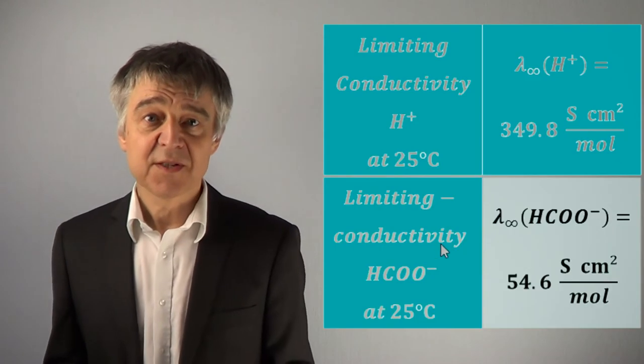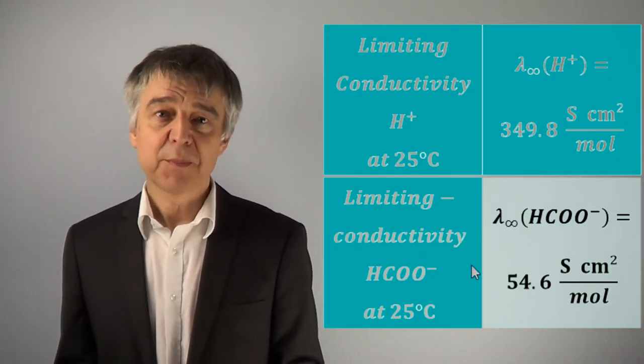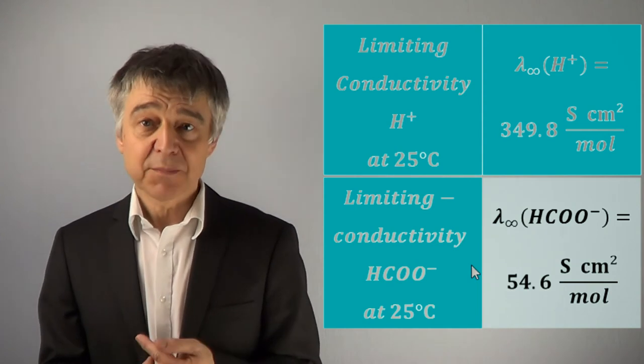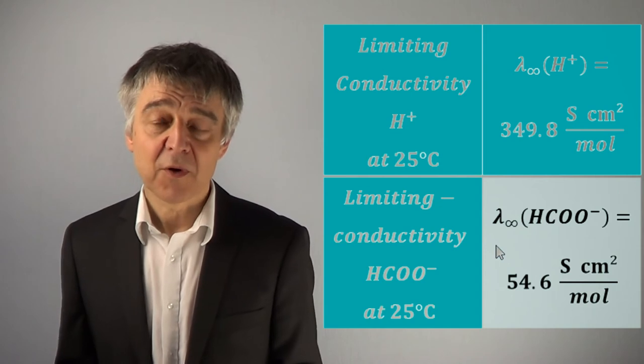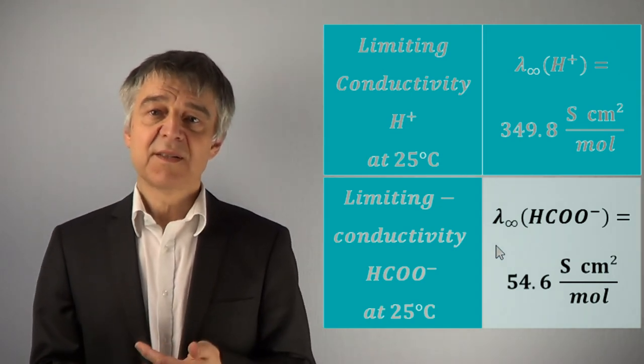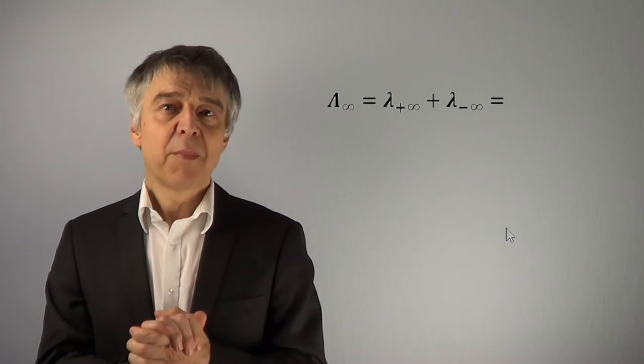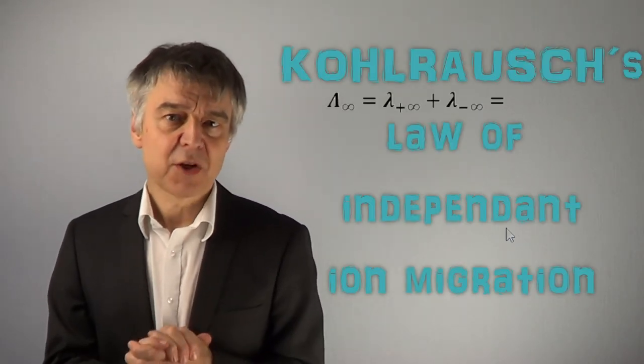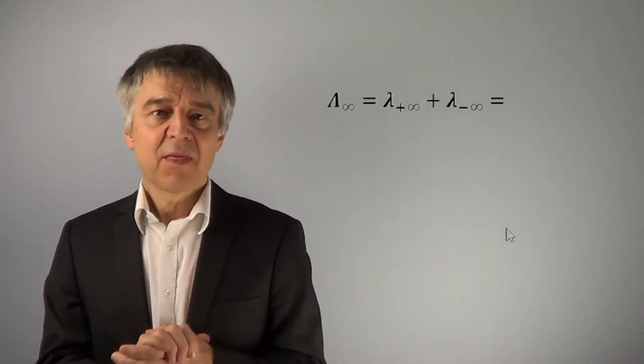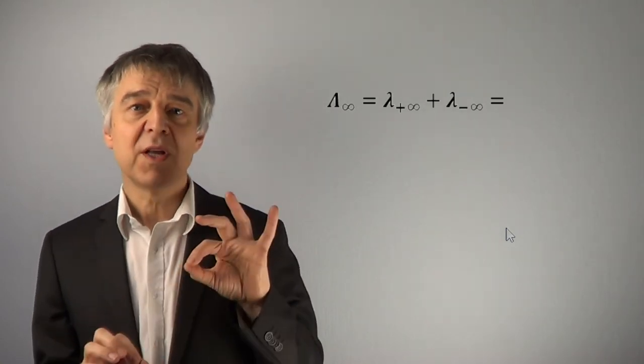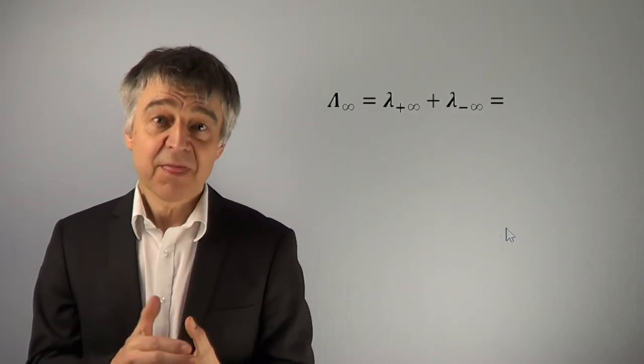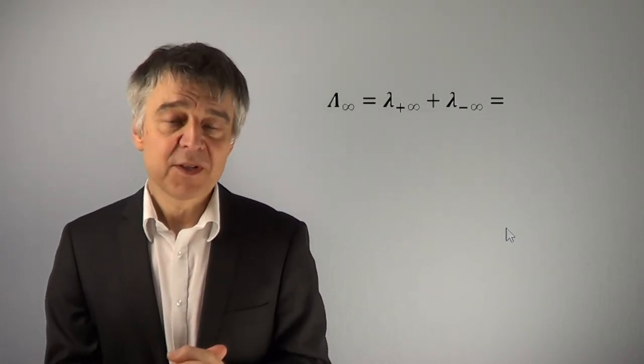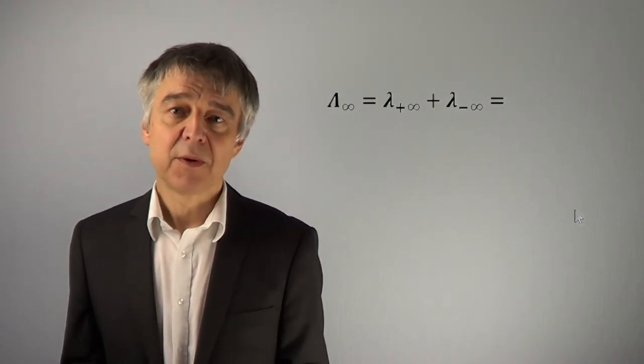By adding the limiting conductivities of protons and formate ions, we obtain the limiting equivalent conductivity lambda of formic acid to 404.4 cm² per mole. Because of the incomplete dissociation of formic acid, the equivalent conductivity is reduced to only 1.3% of this value, that is 5.34 cm² per mole.